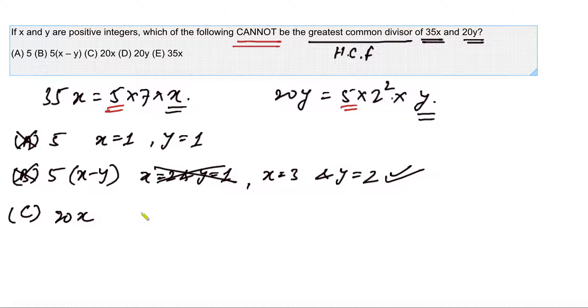So if 20x is a possibility, it should be able to divide each of these numbers without leaving any remainder, which means 35x divided by 20x should be an integer, as well as 20y over 20x should also be an integer. I see 20y over 20x can be an integer if y is equal to x.